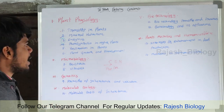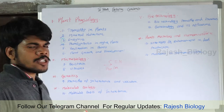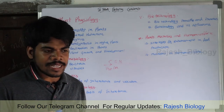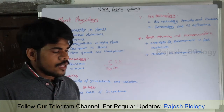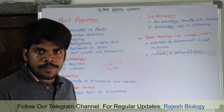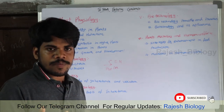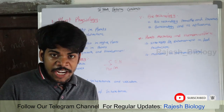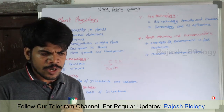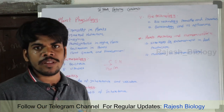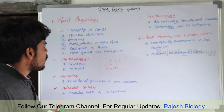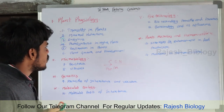Next is respiration in plants. Plants also perform respiration. In this unit the citric acid cycle is present, along with oxidative phosphorylation. We will also cover aerobic respiration and anaerobic respiration. Within anaerobic respiration, fermentation is also discussed. There are so many things present in respiration in plants that we are going to cover.